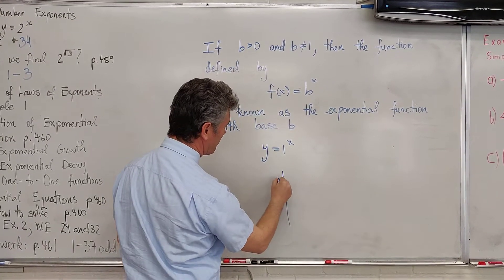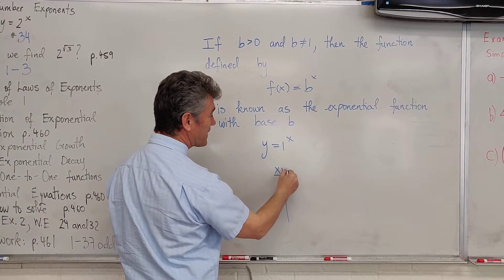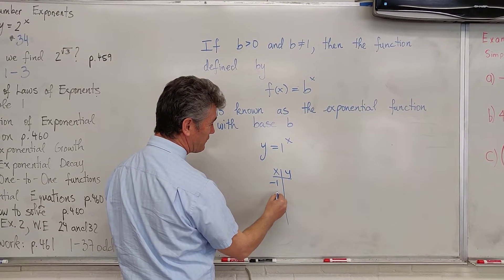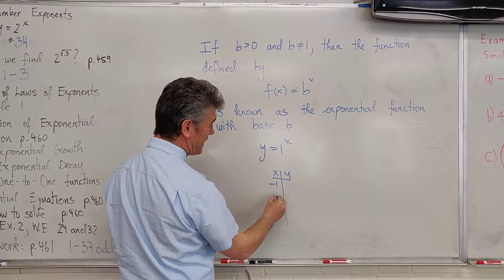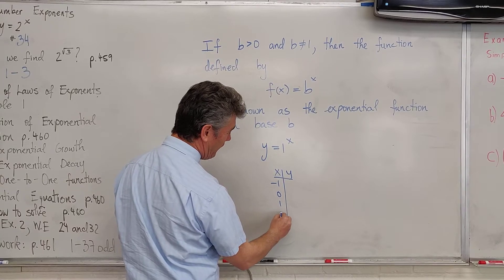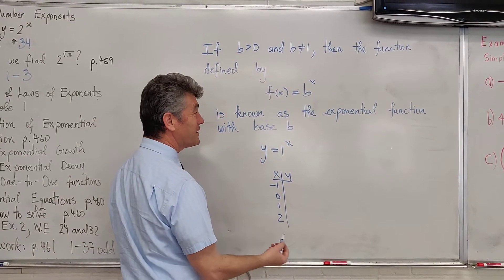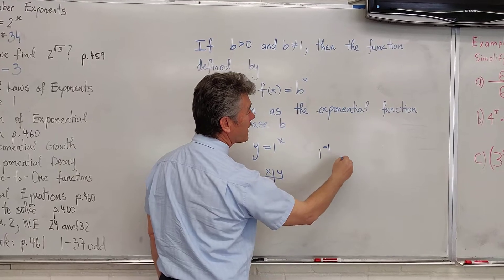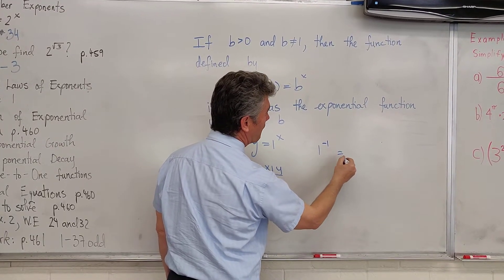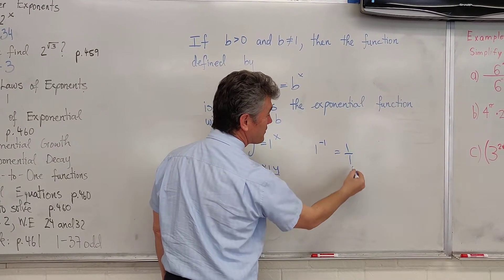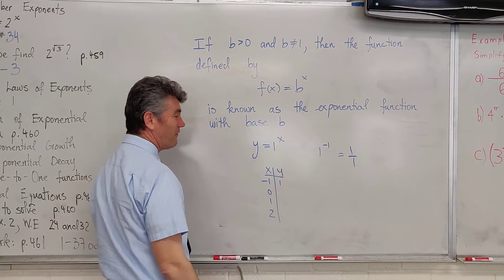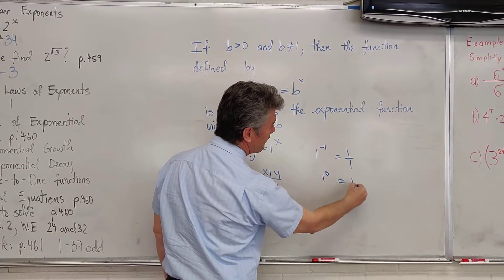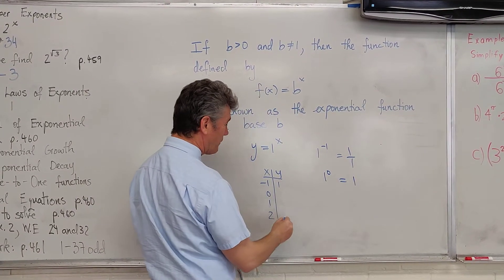Here is x and here is y. Let's choose some values for x: negative 1, 0, 1, 10, and 2. Now let's try this. What is 1 raised to the negative 1 power? 1 raised to the negative 1 is 1 over 1, or just 1. What's 1 to the 0? 1.